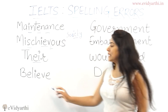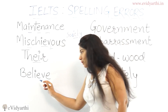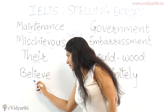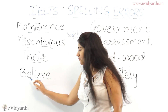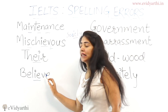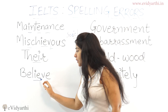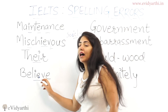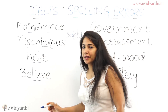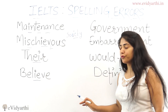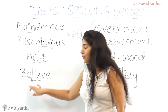Next is 'believe.' Same problem, same mistake people make with 'IE.' The correct spelling is B-E-L-I-E-V-E. Students often write B-E-L-E-I-V-E, which is incorrect. You have to be very careful while writing the spelling of 'believe.'